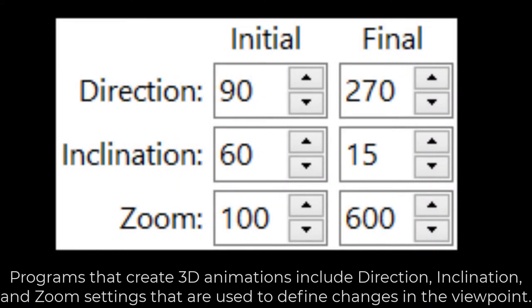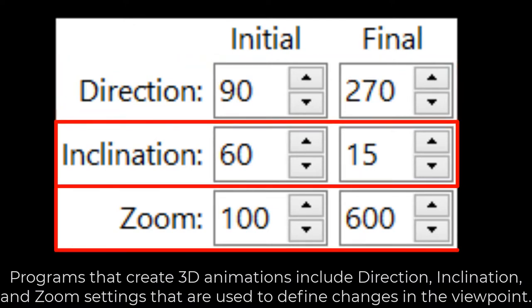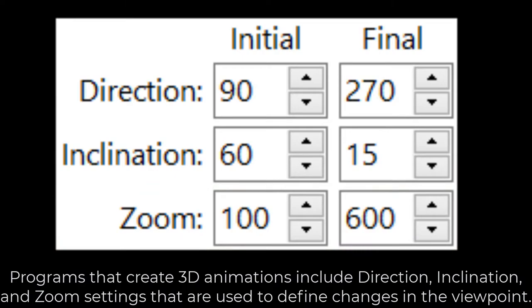Programs that create 3D animations include direction, inclination, and zoom settings that are used to define changes in the viewpoint.